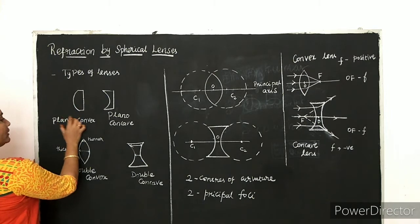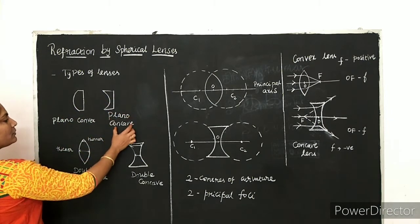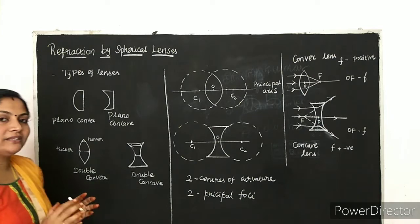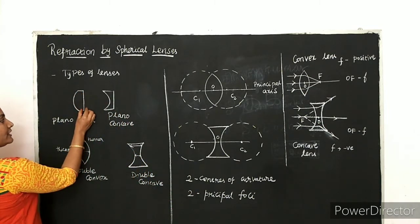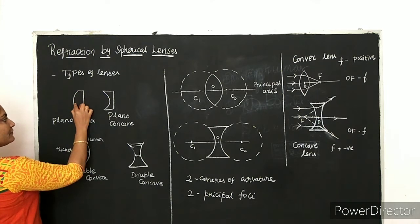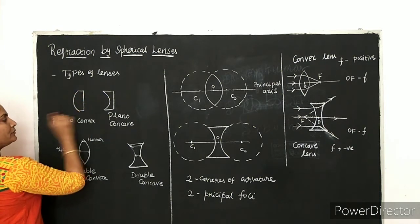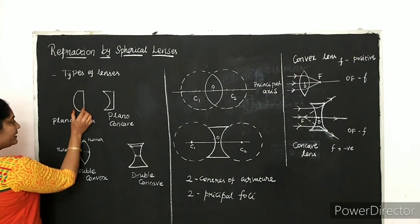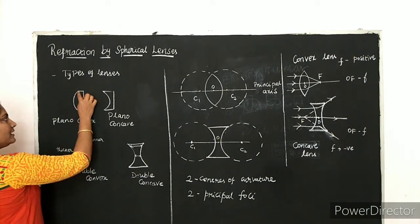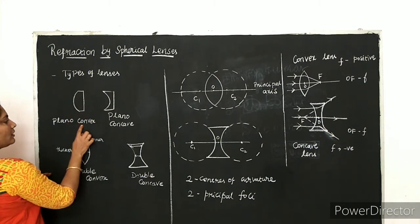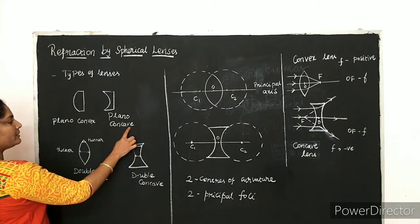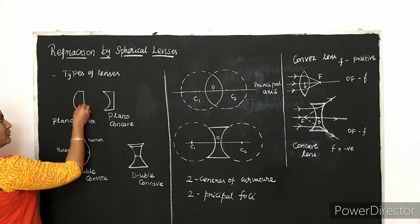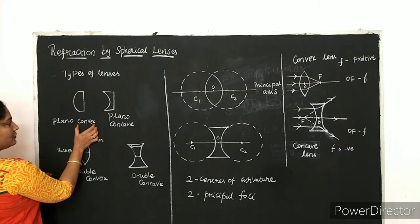The first one is the plano-convex lens and another one is the plano-concave lens. In a plano-convex lens, one surface is flat and the other surface is curved outward. Curved outward means it is convex. So one surface is plane and the other surface is curved outward — combined, that is called a plano-convex lens.